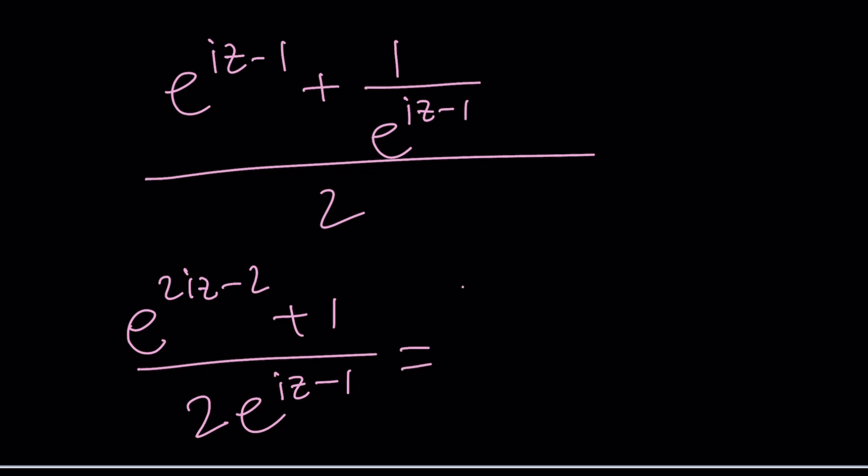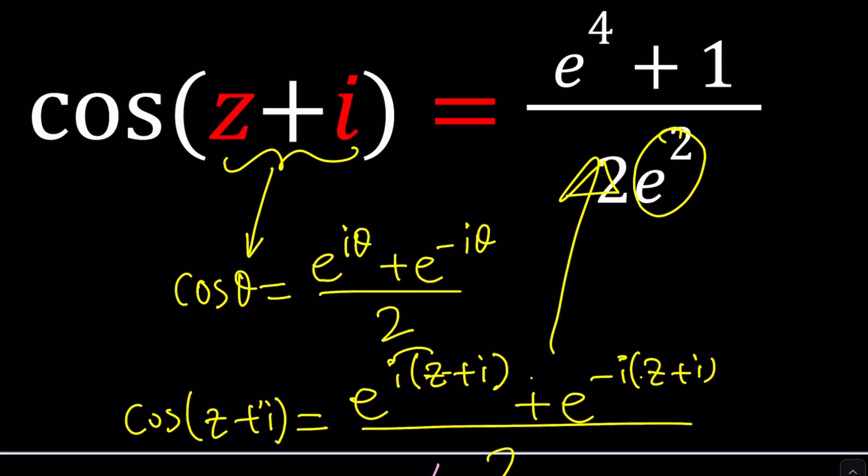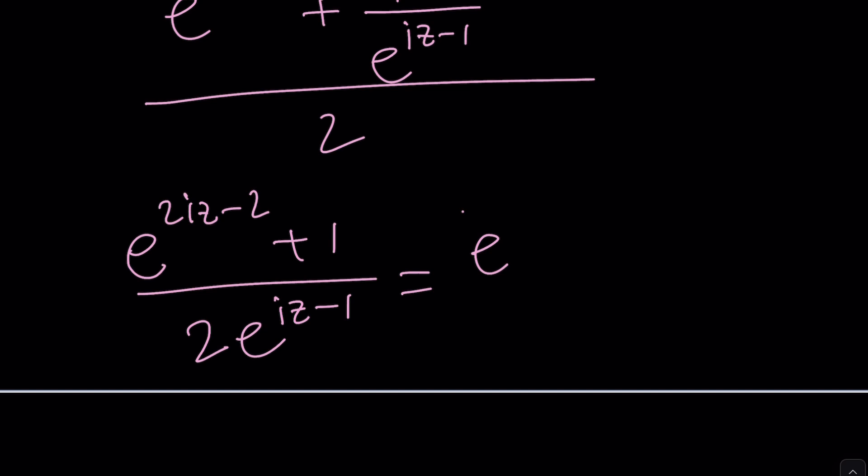And then I'm going to go ahead and make a common denominator. e to the power 2 i z minus two plus one divided by two times e to the power i z minus one. So now this looks very much like our original expression, which is e to the fourth plus one divided by two e squared. If you look at the coefficient, first of all, we have the twos that correspond. And then here, if i z minus one is equal to two, then two times that should be a four. Get it? So it kind of works.